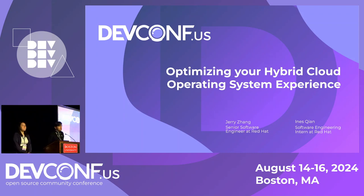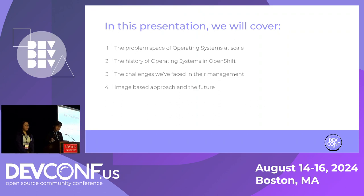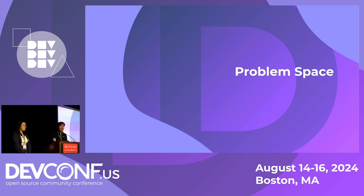Today we'll talk about the hybrid cloud operating system experience, the journeys we took, and how we got here as OpenShift. We'll be covering the problem space first - what it means for large-scale Linux operating systems - the history and challenges that we here at OpenShift have faced, as well as stories across different cloud providers. We'll talk about the challenges we face and how we want to leverage image-based approaches as our future solution.